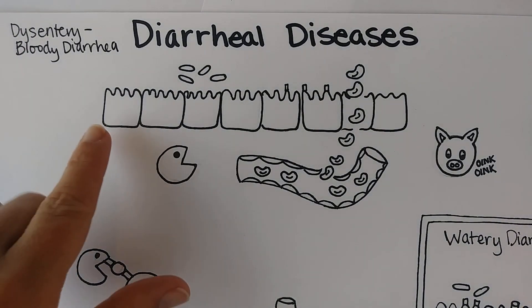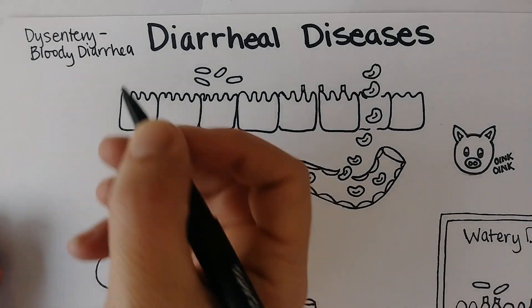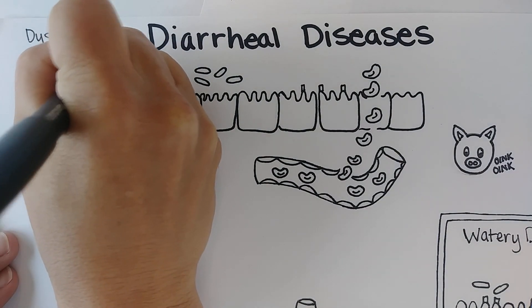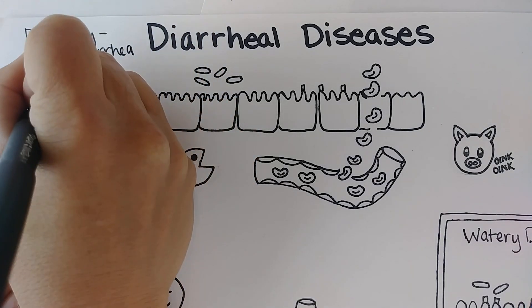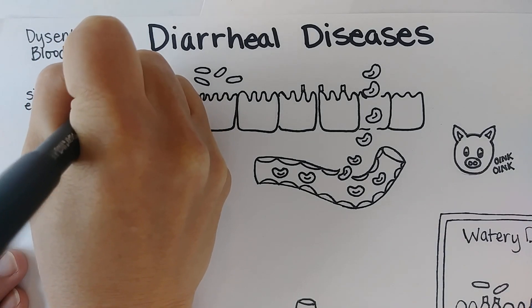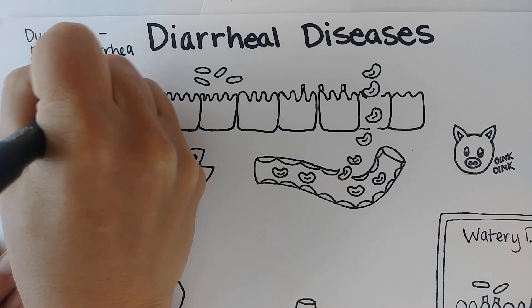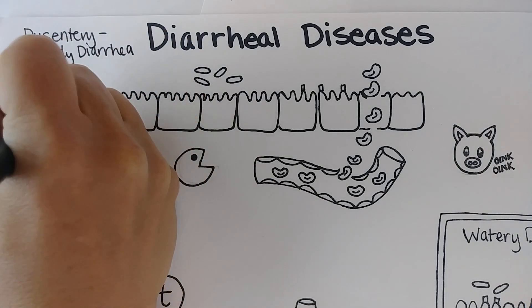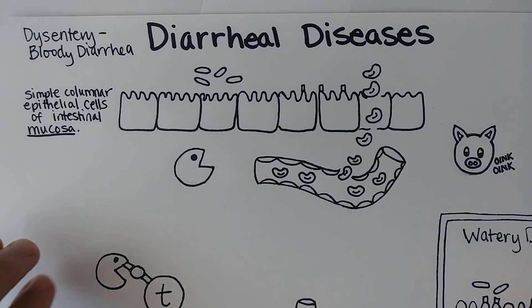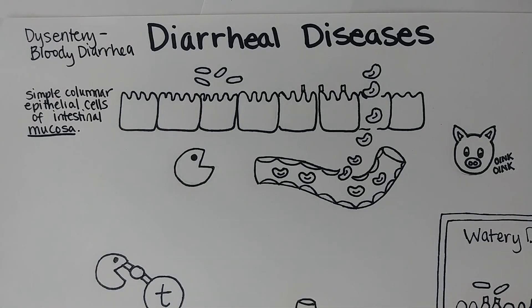At the top of this picture we have the simple columnar epithelial cells of the mucosa in the intestine. The cells that line your intestine are tall columnar epithelial cells, and this part of the intestinal wall is called the mucosa. This is your barrier to the world — you want this to be strong, healthy, and have lots of good bacteria. We're going to focus on when the bad bacteria get out of control.